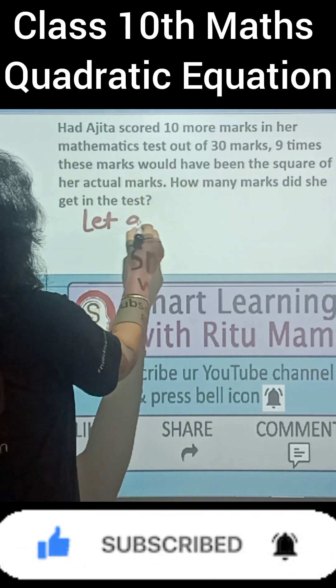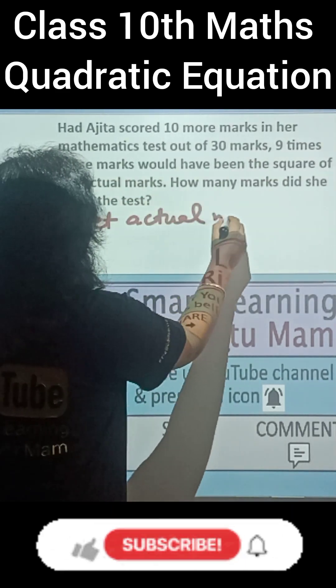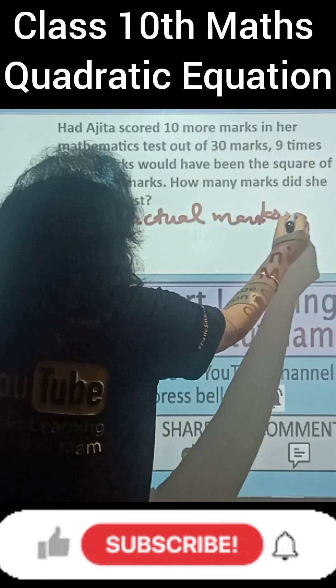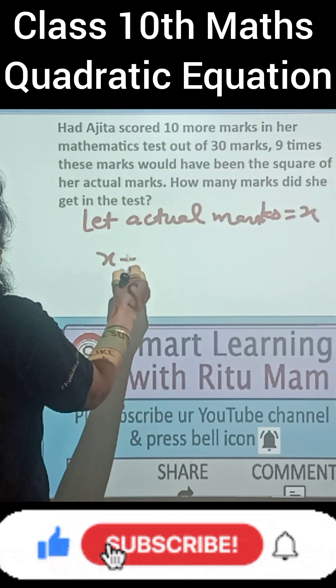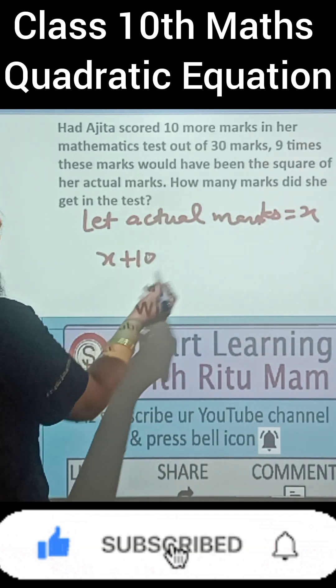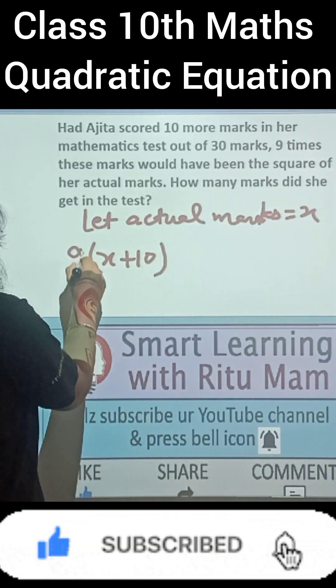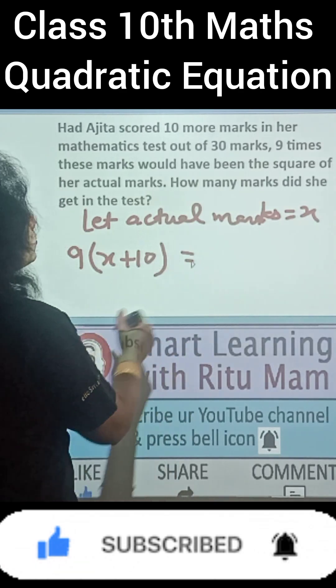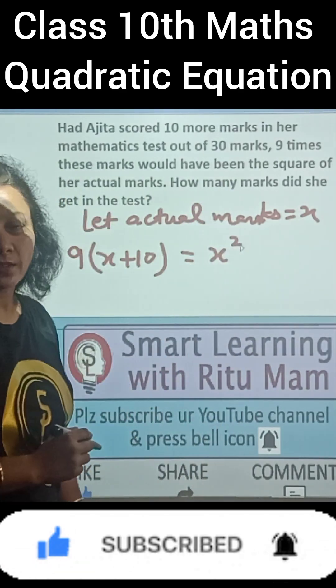Let actual marks is x. Then if she scored 10 marks more, then she will score x plus 10. Then 9 times of these marks is equal to square of her actual marks.